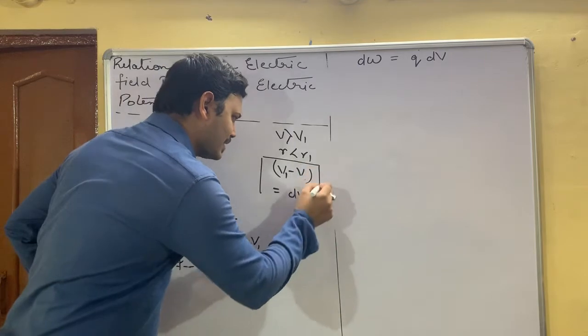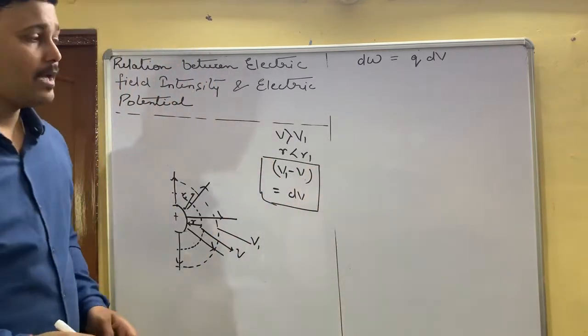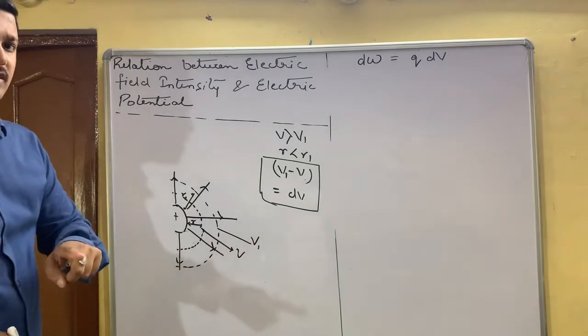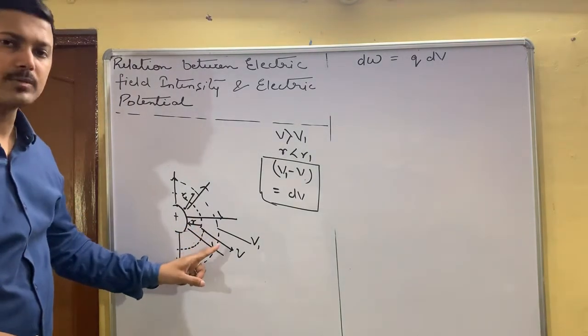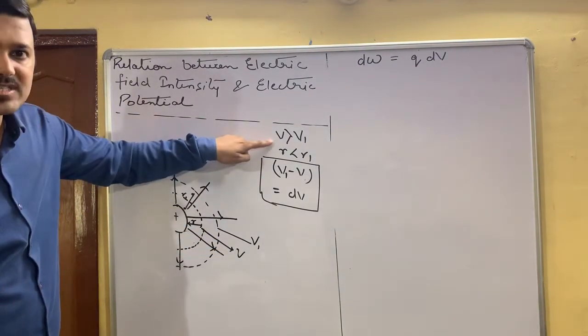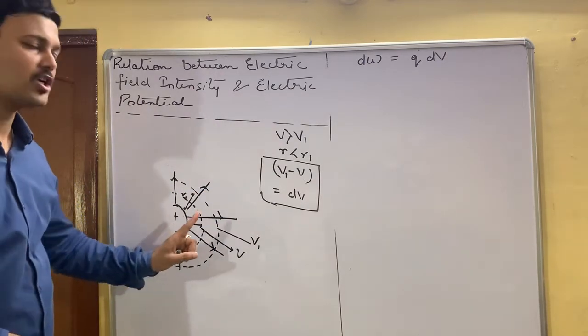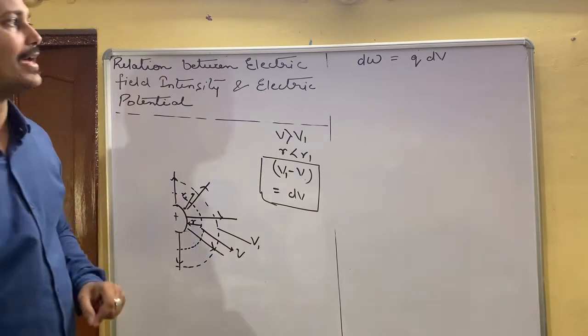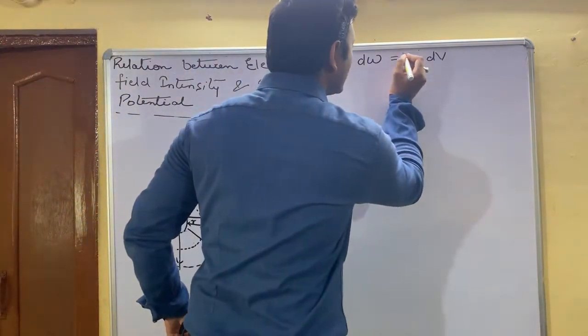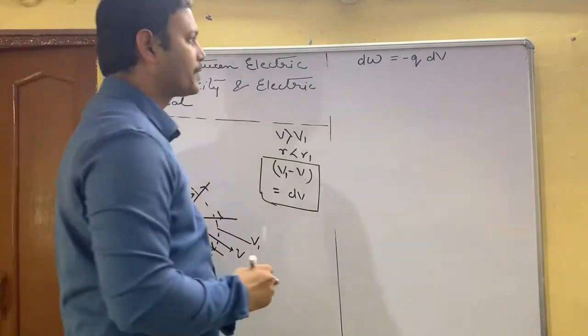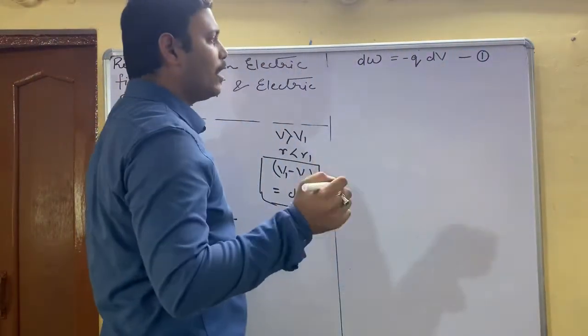So the difference is given as delta V. But since we are moving from a region of higher potential to lower potential, as the value is given, we are moving from a region of higher potential to lower potential. That's why a negative sign should be here. It is your first equation.